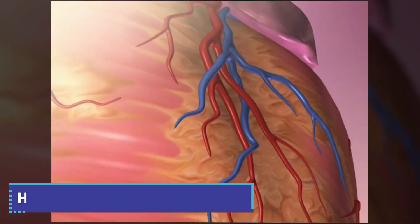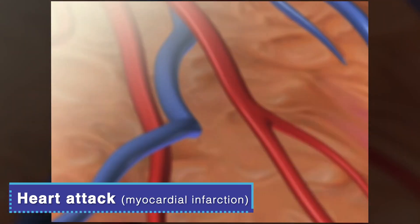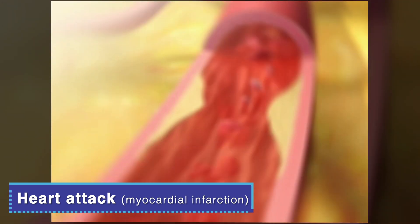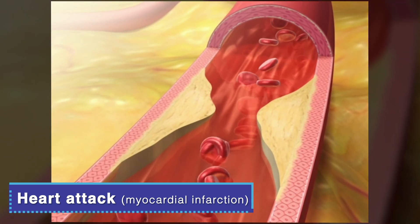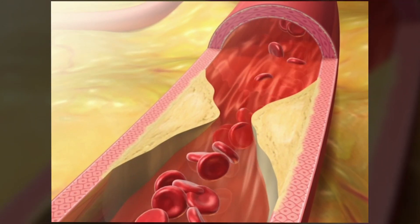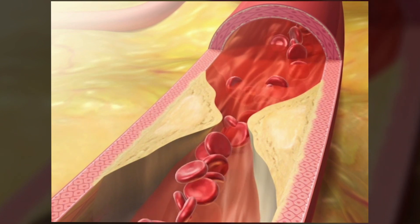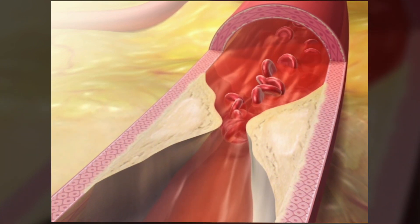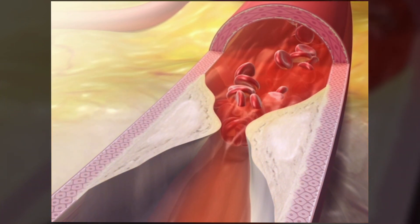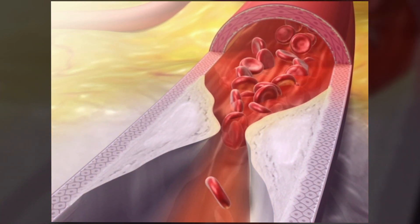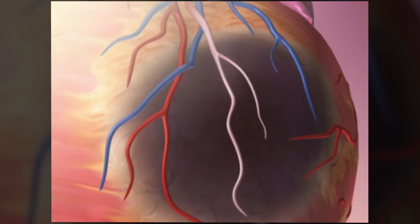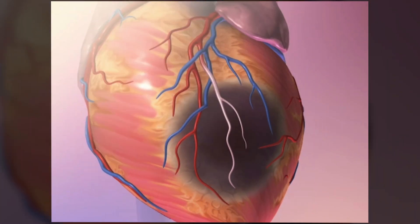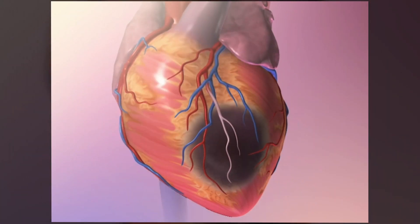A heart attack, or myocardial infarction, happens if one of the coronary arteries becomes blocked. When this occurs, the heart's tissues can't get the oxygen they need. Without enough oxygen, the muscles of the heart become damaged and vital muscle tissue can die.